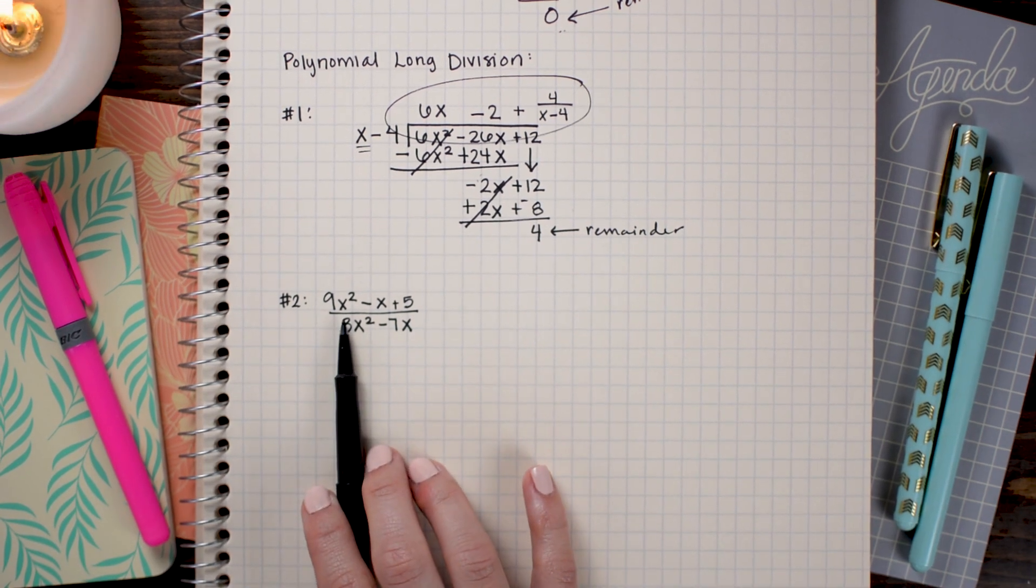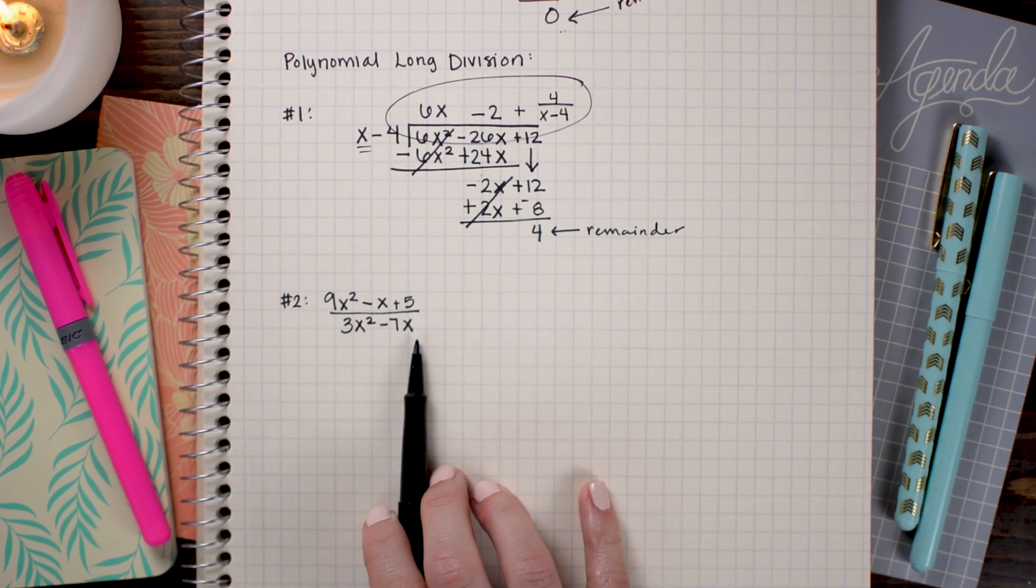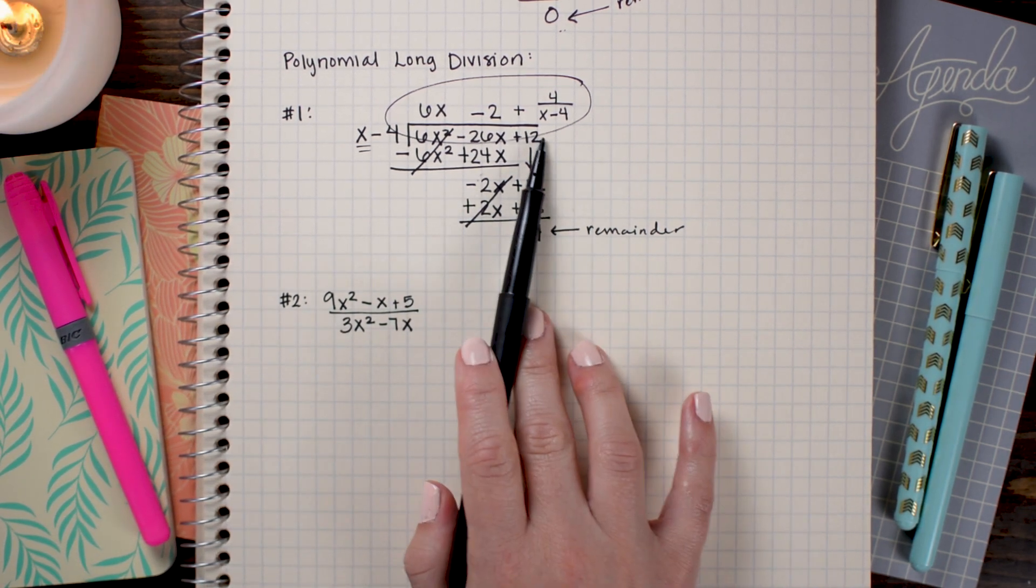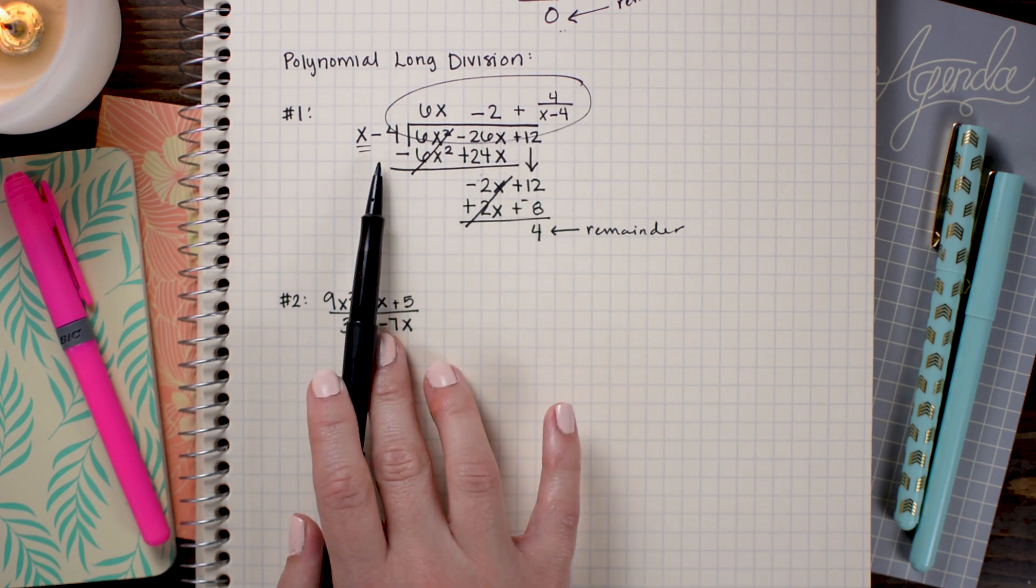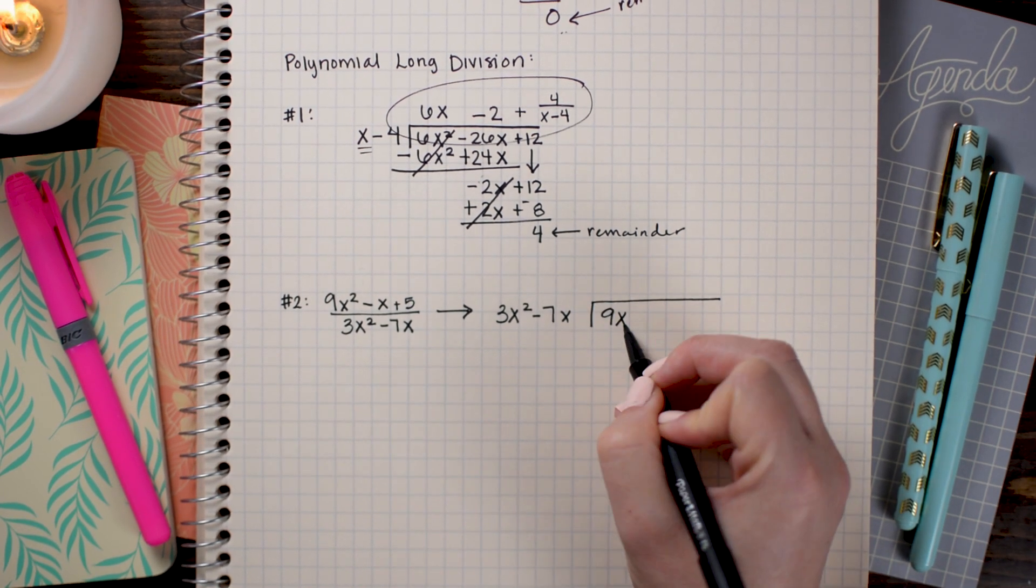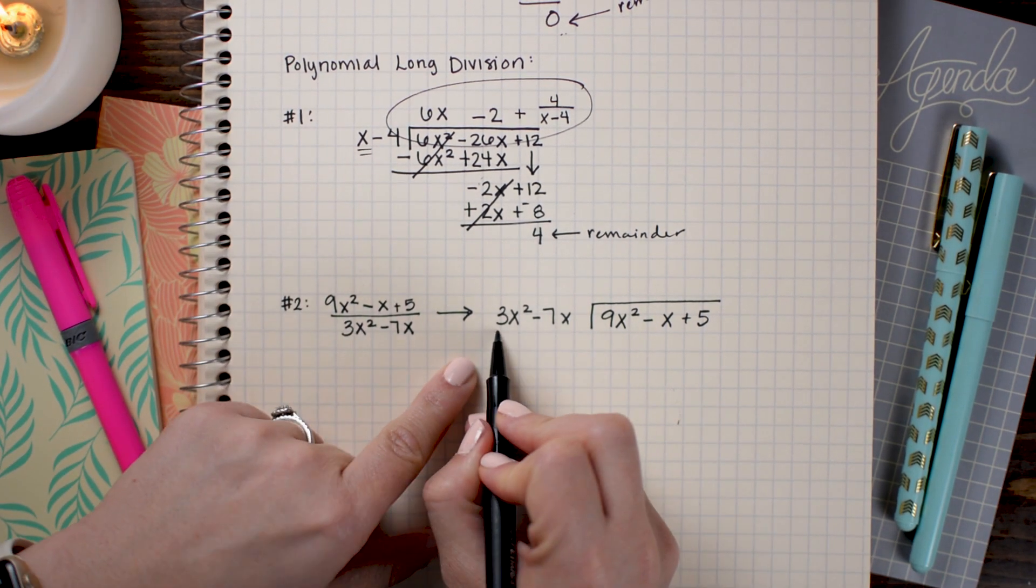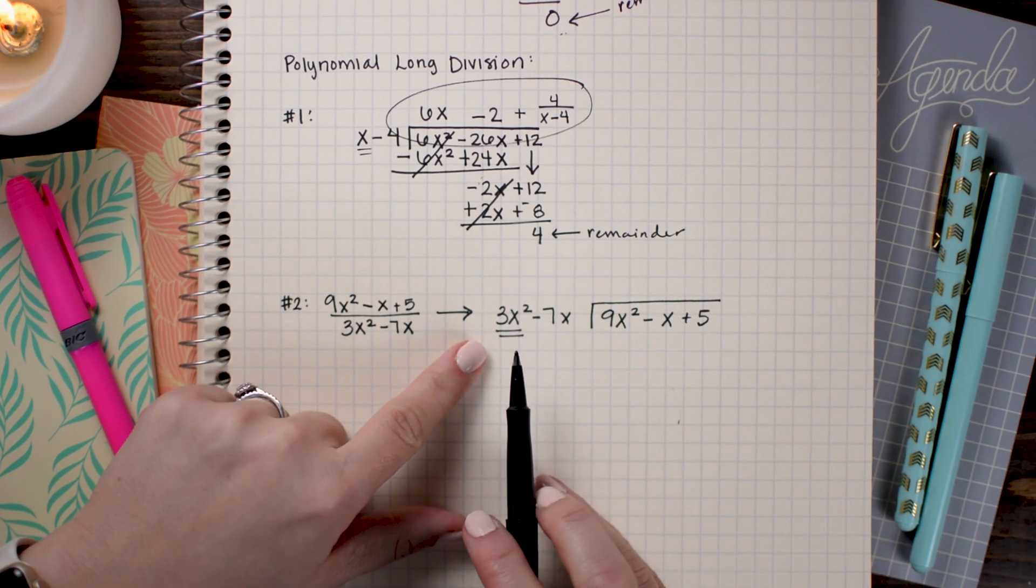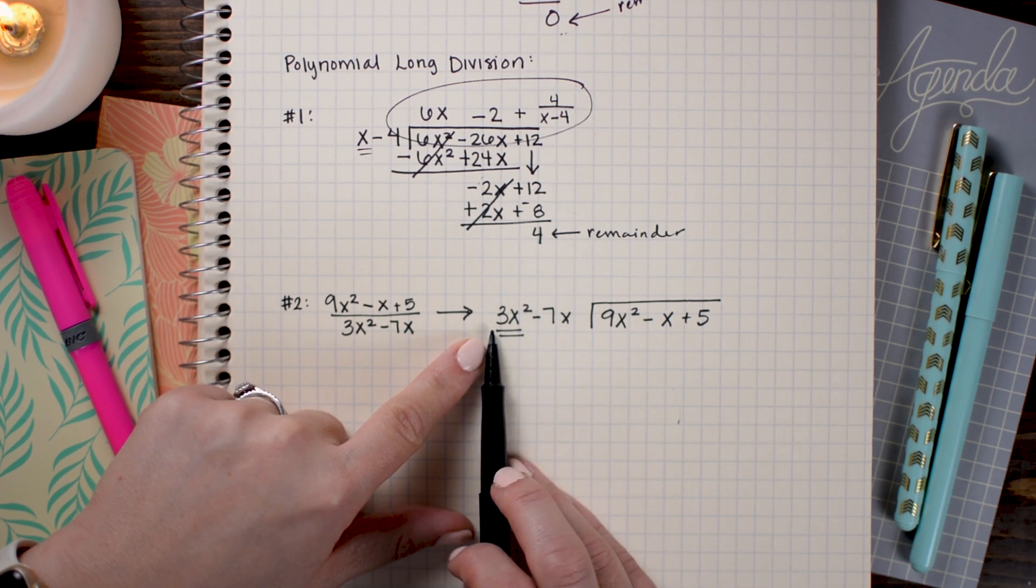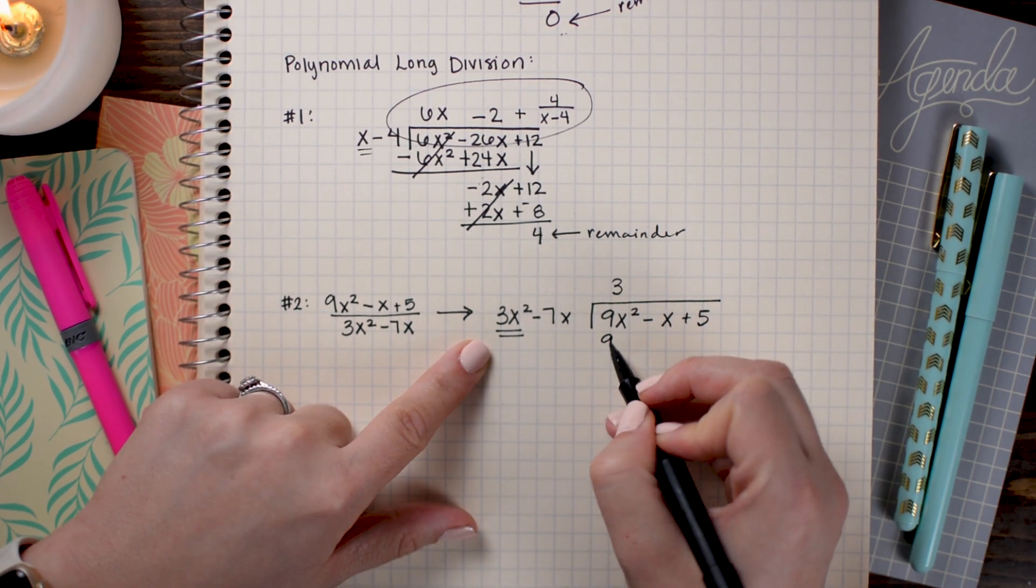So in this problem, we're given 9x² - x + 5 divided by 3x² - 7x. So the first thing I want to do is rewrite it in the long division form. So the number on top is going to go on the inside and then we are dividing it by the number on bottom. All right, let's begin this problem just like we did with the last one. We are going to look at the first term and we want to see what we could multiply it with to get 9x².